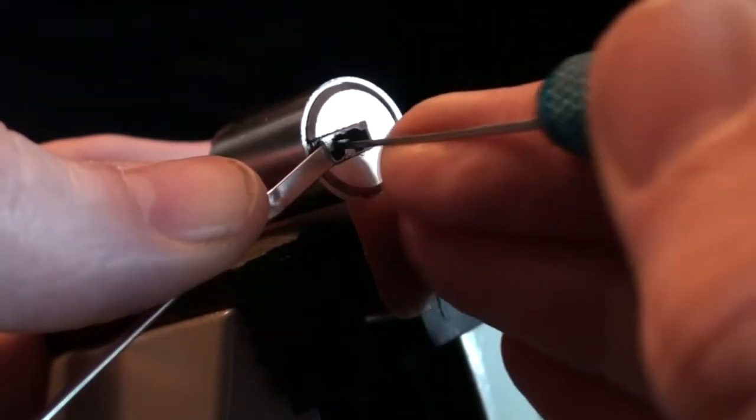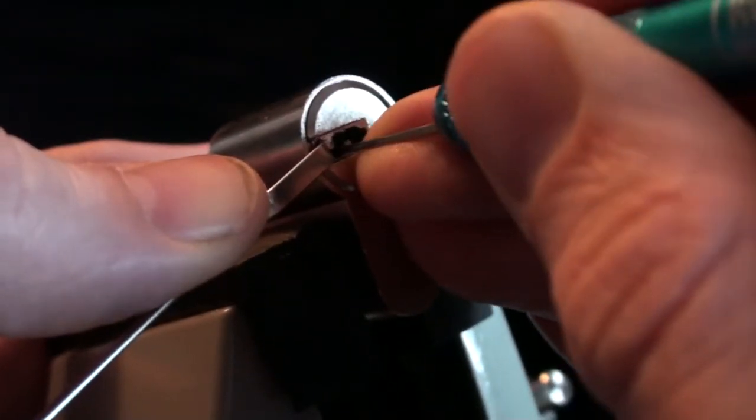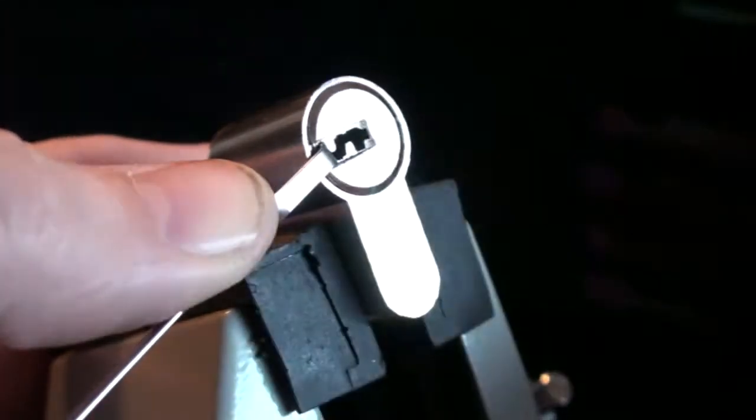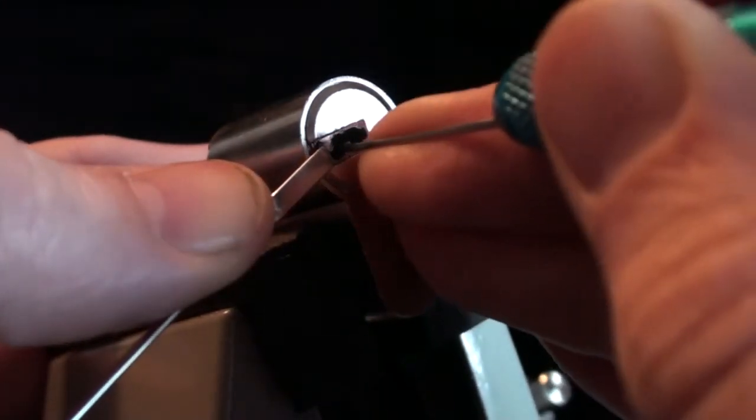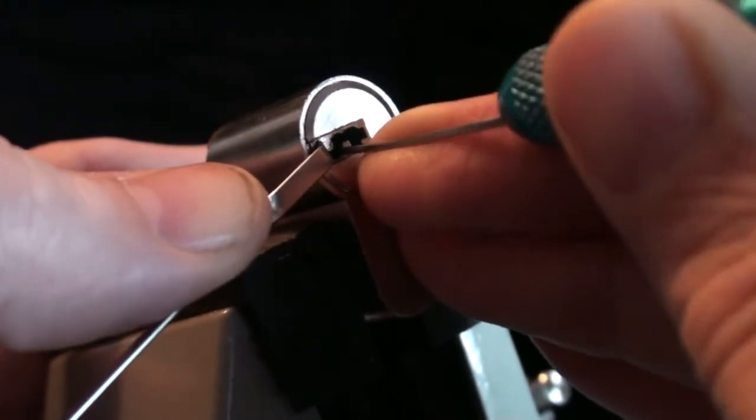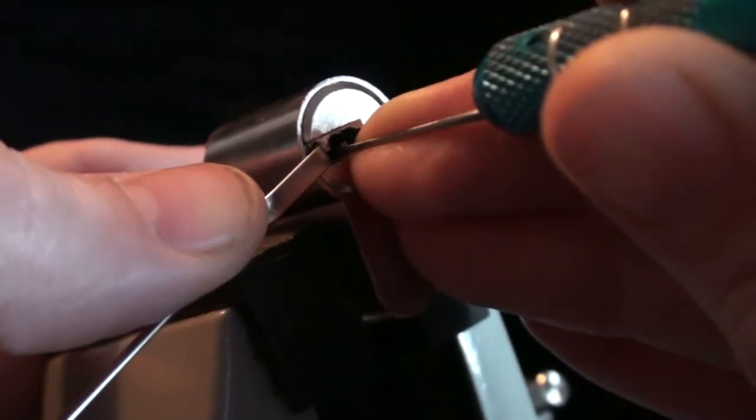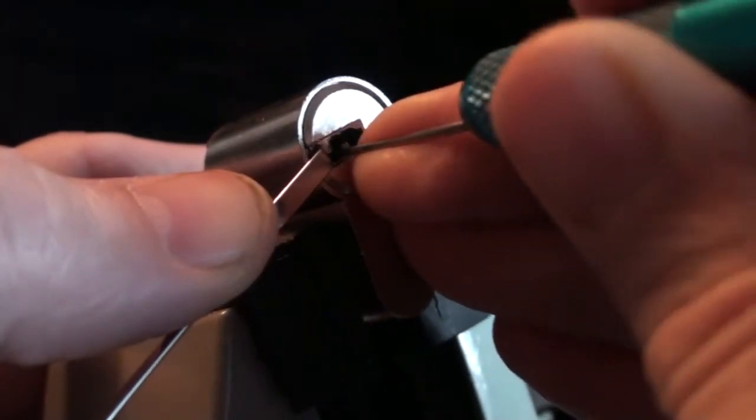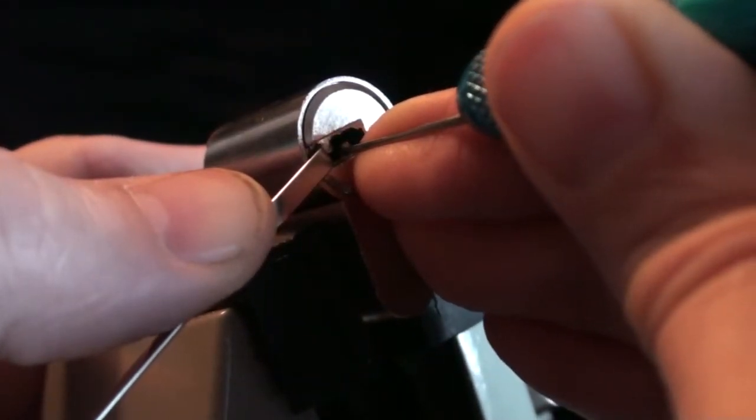A little click off number 1, going straight in. A little nudge on number 3. We had 3 clicks on number 6 which gave us a false set. Now pin number 2 is binding. Pretty difficult to get on top of, but it gave us a nice false set.